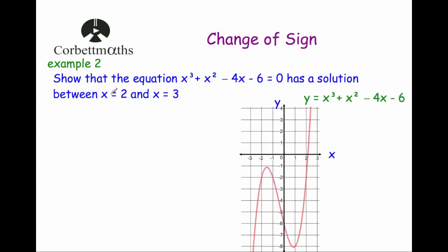Example 2: show that the equation x cubed plus x squared minus 4x minus 6 equals 0 has a solution between x equals 2 and x equals 3. This equation is much more difficult than the previous one, making change of sign quite useful. The graph crosses the x-axis between 2 and 3, and it looks like the solution is closer to 2 than 3, though we just need to demonstrate the change of sign.